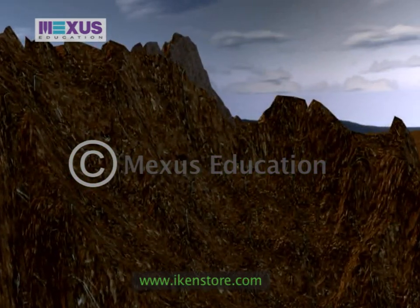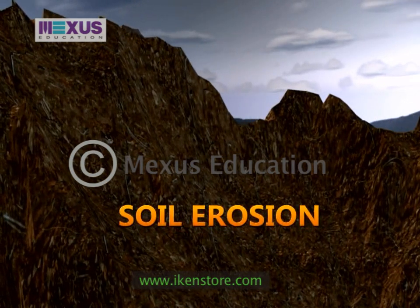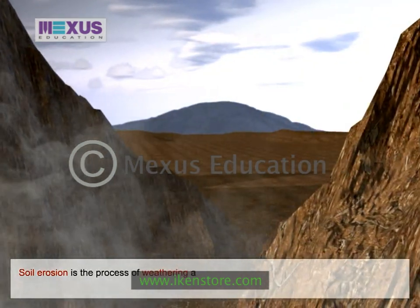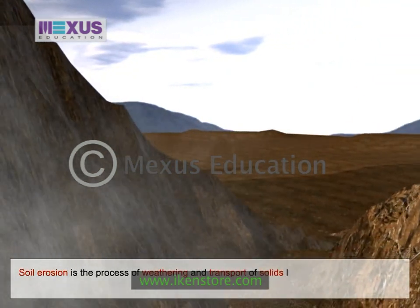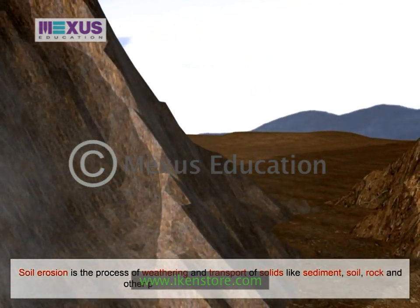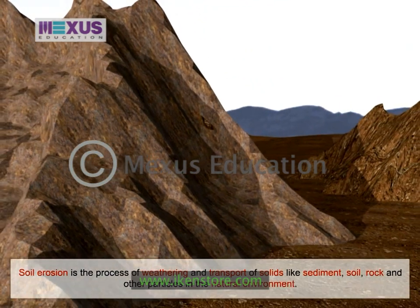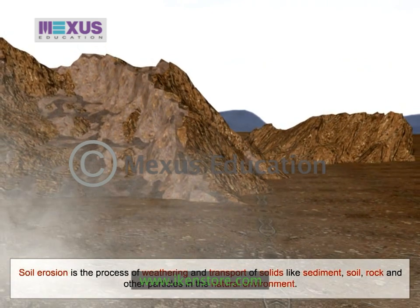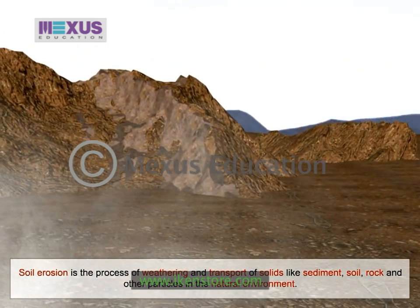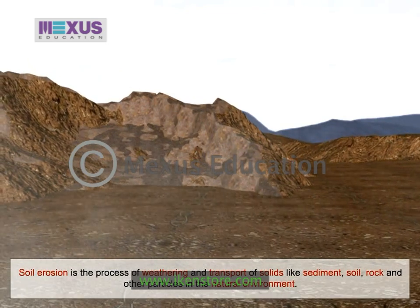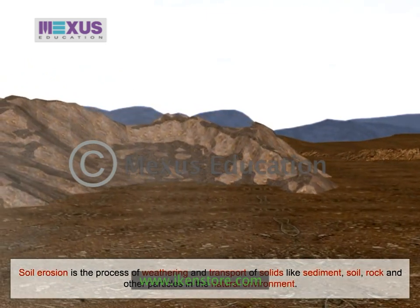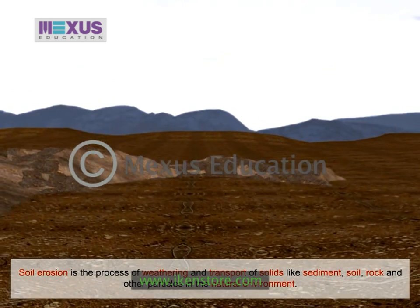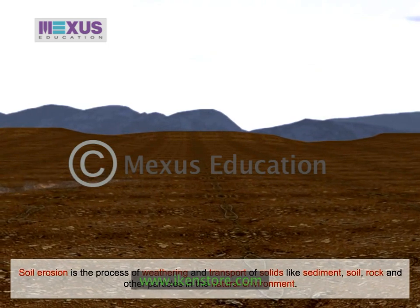Soil pollution that takes place in general is in the form of soil erosion. Soil erosion is the process of weathering and transport of solids like sediment, soil, rock and other particles in the natural environment. It usually occurs due to transport by wind, water or ice, or by downslope creep of soil and other material. Erosion of soil is more severe in areas of little or no surface vegetation such as deserts or bare lands. Hence, deforestation should be avoided.